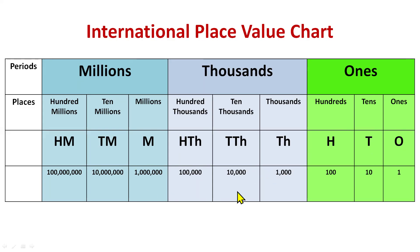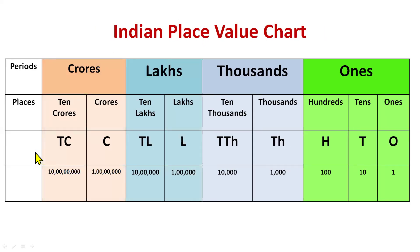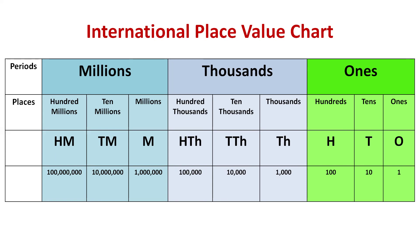The main difference between the Indian and international place value charts lies in the grouping of digits. In the Indian place value chart, digits are grouped in sets of two, known as lakhs and crores. In the international place value chart, digits are grouped in sets of three, using thousands, millions, billions, and so on.